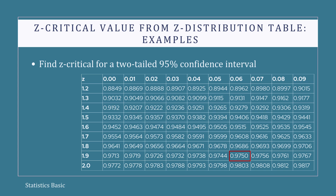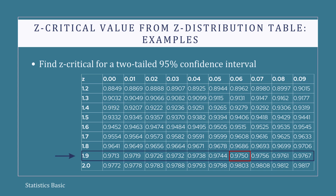The corresponding row is z equals 1.9 and the corresponding column is z equals 0.06. This means the z-critical value is 1.96. The lower critical value is minus 1.96 and the upper critical value is 1.96.